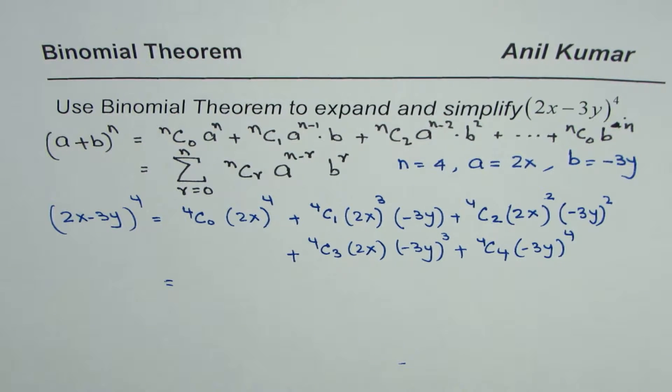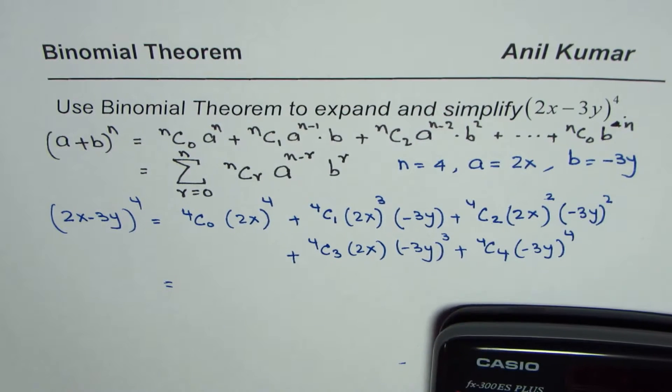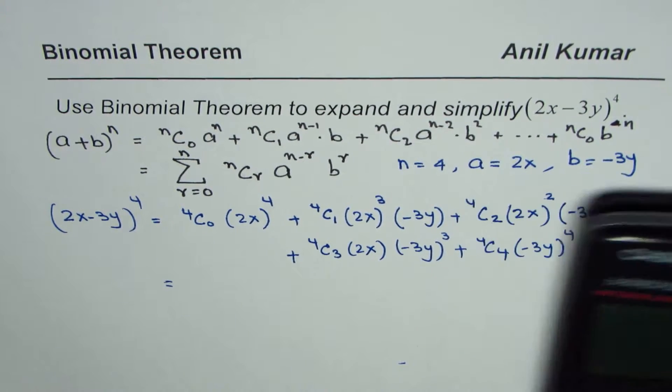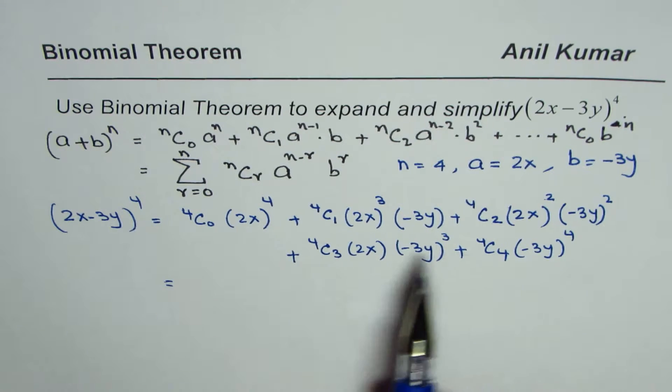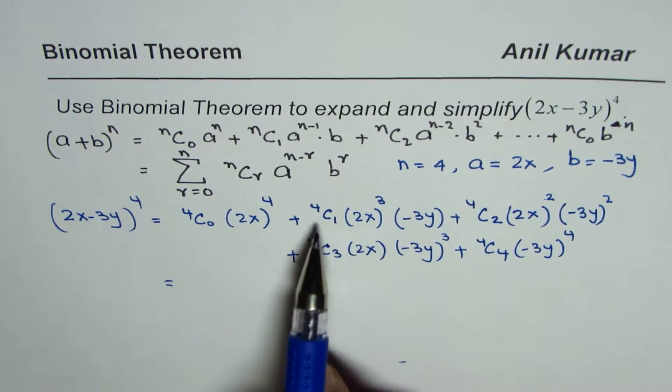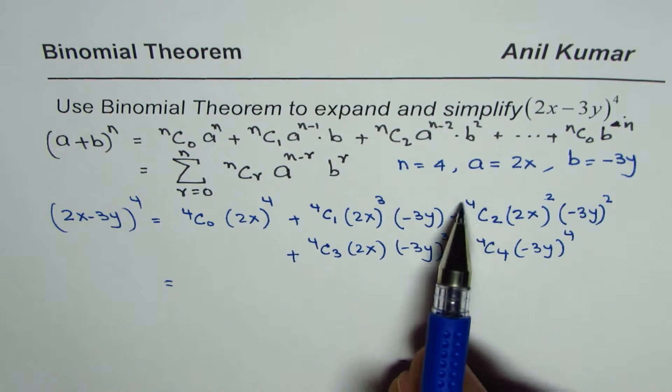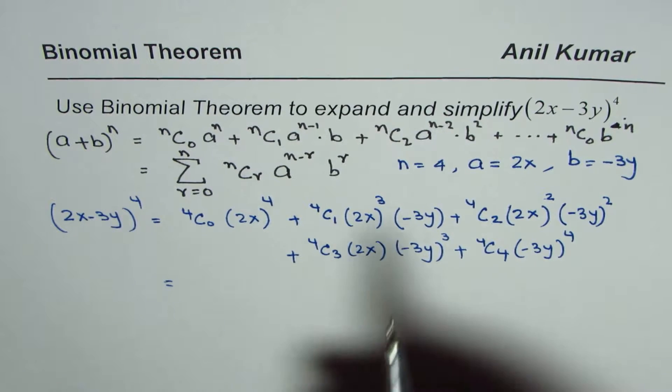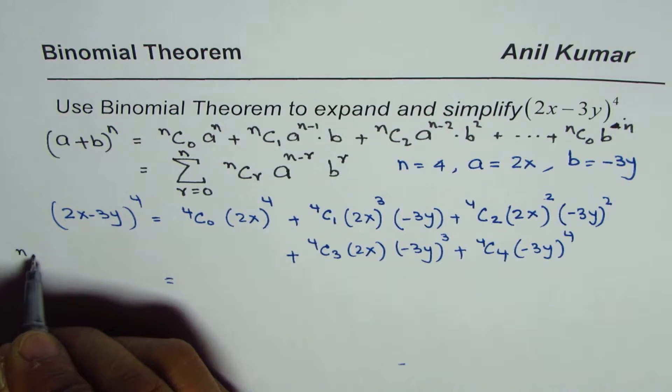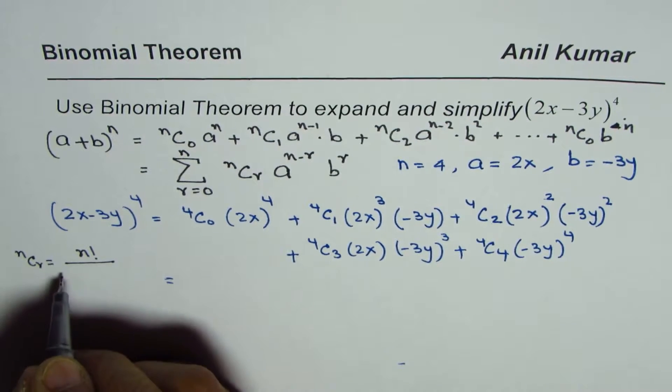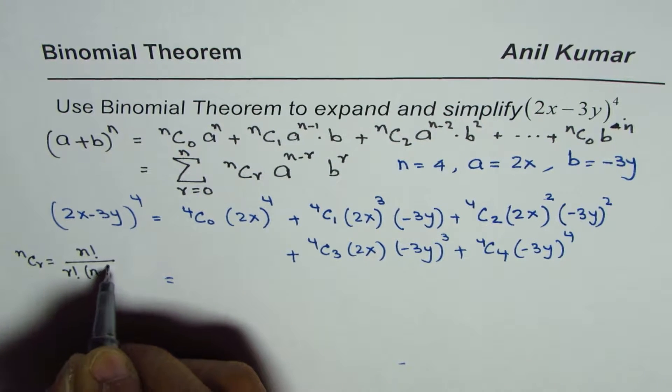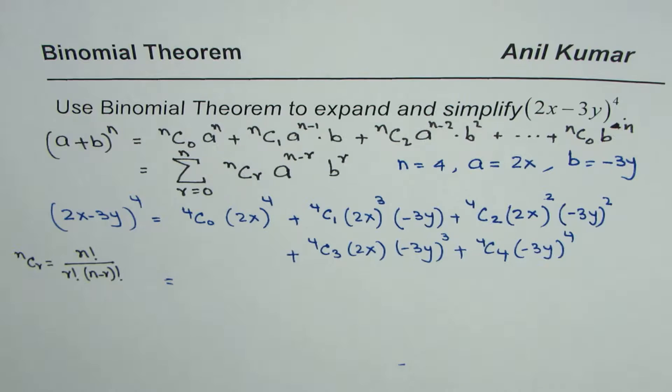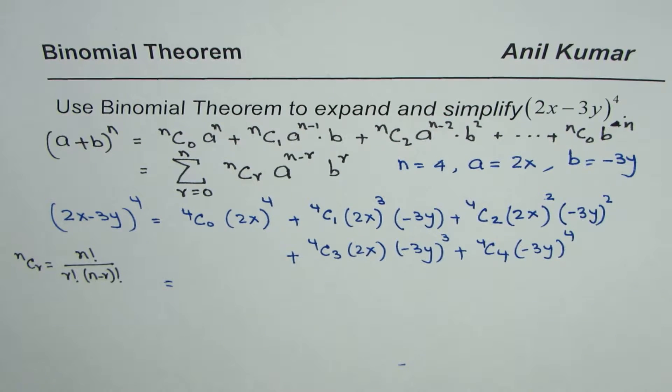I hope this step is clear. Now we can use calculator to calculate the values. 4C0 you know is 1 and 4C4 is also 1. 4C1 is 4 and same is the case with 4C3. 4C2, you can apply the formula of combination to find these values. In general, nCr is equal to n factorial divided by r factorial times n minus r factorial. You could use this to find the values. However, I will use the calculator which you can also use.